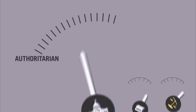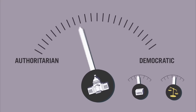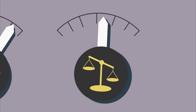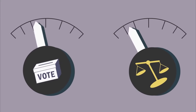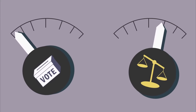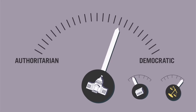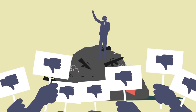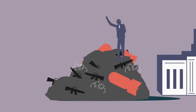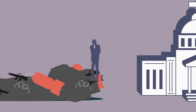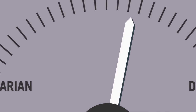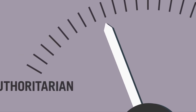Frequently, governments lie somewhere in the space between the two poles of democracy and authoritarianism. These governments may win real elections, but ignore minority rights. Or they might manipulate elections, but uphold some democratic values. Regardless of the system, a country's form of government is never set in stone. Even the most repressive authoritarian systems can be toppled or transformed by people taking to the streets in revolutions, or gradually become more democratic through reforms. At the same time, strong democracies can drift toward authoritarianism, a process that is often referred to as democratic backsliding.